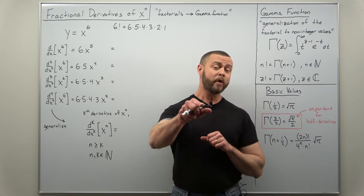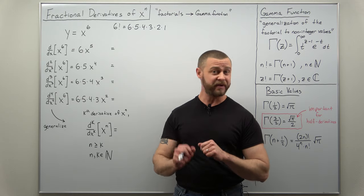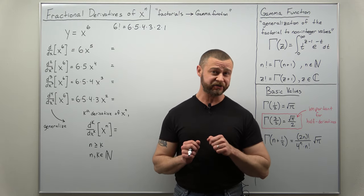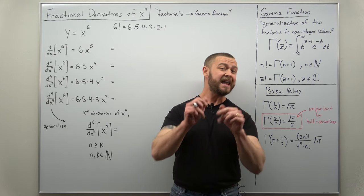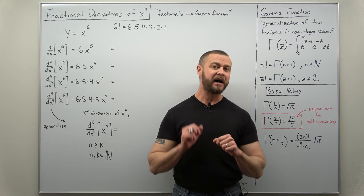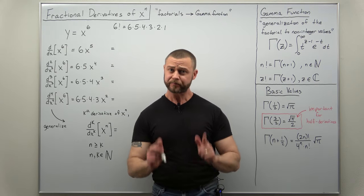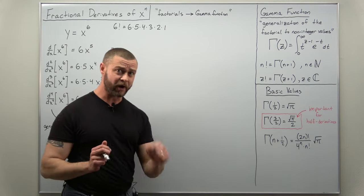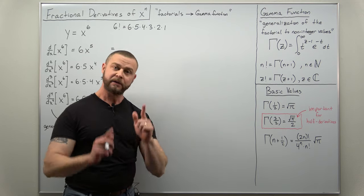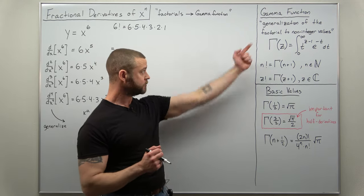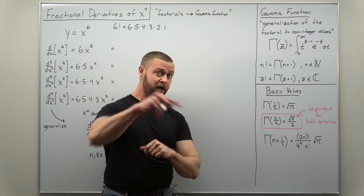Greetings fellow mathematicians. We're going to take a look at the peculiar topic of how to define a fractional derivative for a power of x. In your calculus courses you know how to find a first, second, third derivative — any order where that order is a positive integer. But what about a half derivative? The basic idea is we're going to replace factorials with gamma function values, so you'll want to be familiar with the gamma function, which is defined and linked in a previous video.